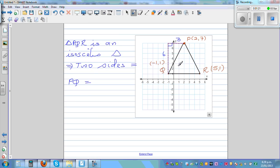So using Pythagoras, PQ is square root of 6 squared plus 3 squared. Which is square root of 36 plus 9, which is square root of 45.